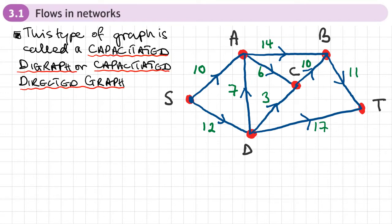This type of graph is called a capacitated digraph or a capacitated directed graph. A digraph has arrows on the arcs showing the direction of that arc or edge — the direction in which the arc goes. It can't go back the other way.